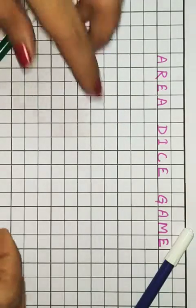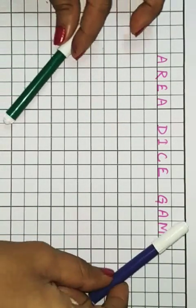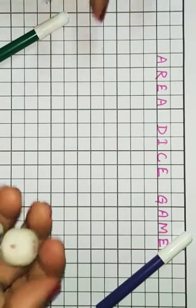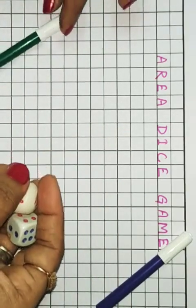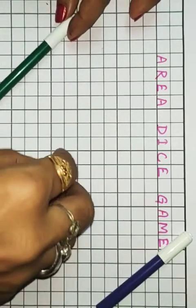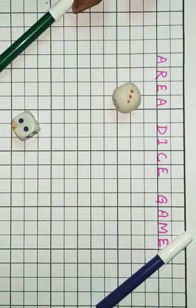We're going to play a game that is the area dice game. You need two children, two color sketch pens, and two dice to roll. The first child will be given a chance to roll the two dices.